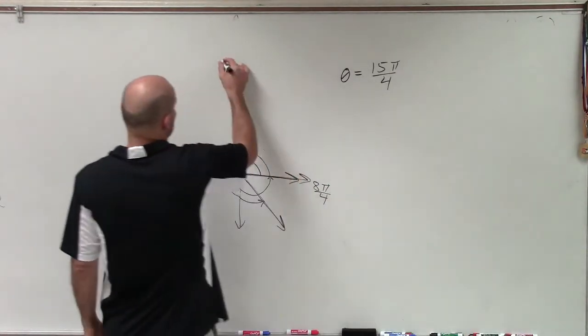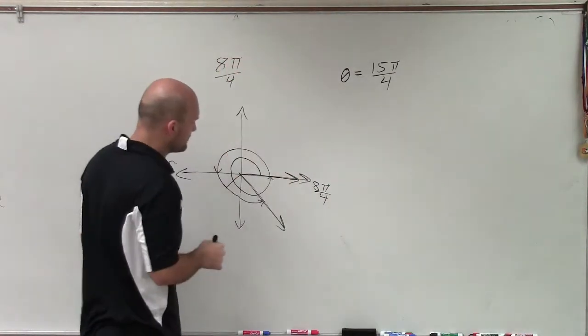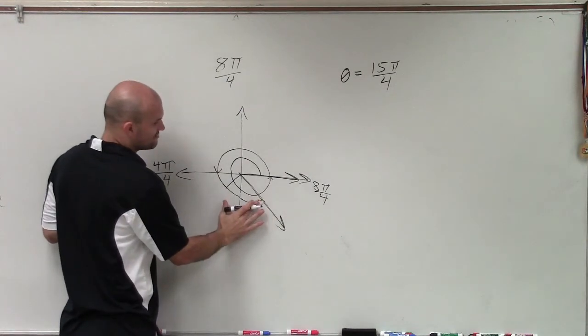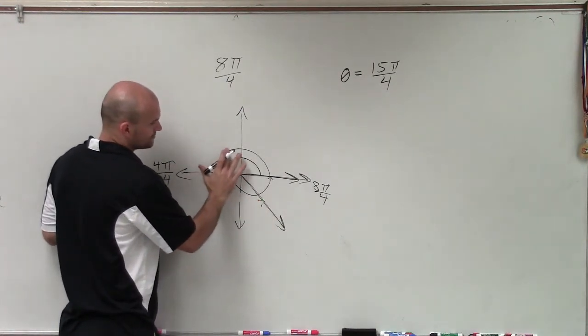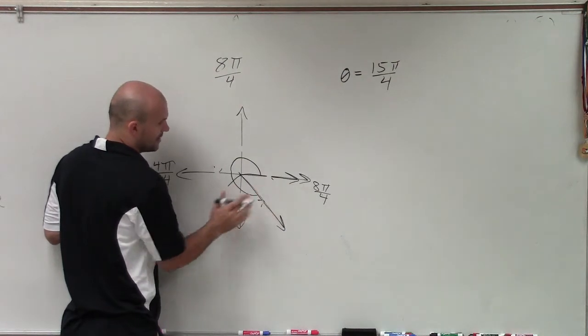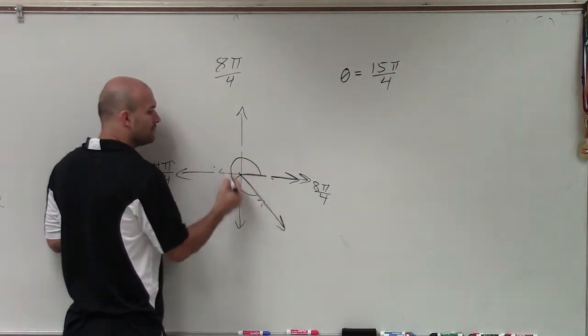Now remember, we're determining revolution as 8 pi over 4. So if I take this and I subtract a revolution, you can see now I just have one single angle.